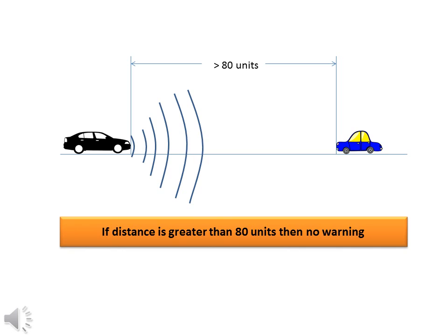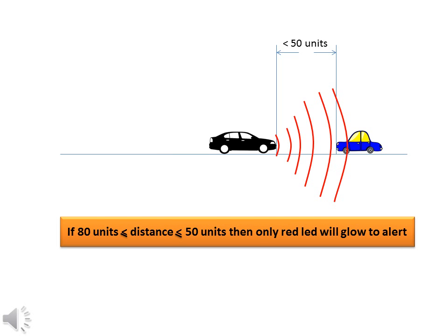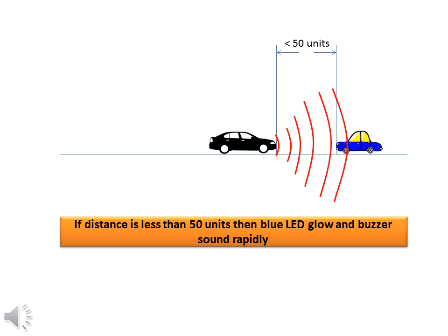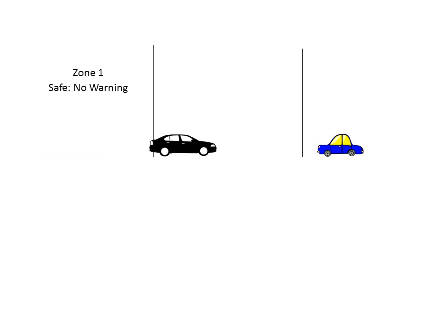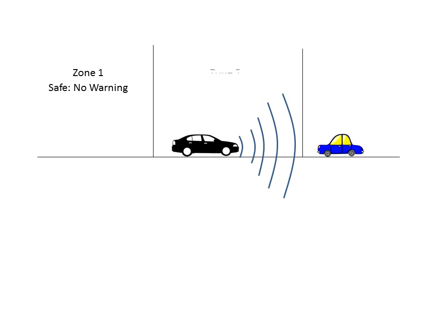If the distance between vehicles is greater than 80 units, there will be no warning. If the distance is less than 80 units and greater than or equal to 50 units, there will be a visual lighting warning. If the distance is less than 50 units, the blue LED glows and there will be a rapid buzzer warning.